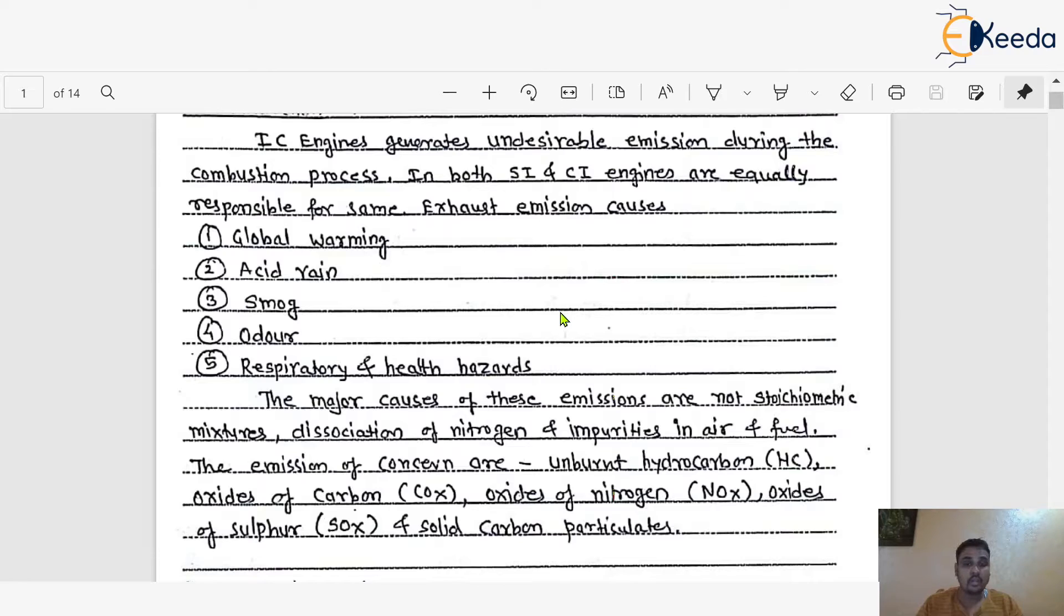The exhaust emission is a very important parameter in the study of particular IC engine. We know the IC engine generates undesirable emissions during the combustion process, and this is in both cases of spark ignition and compression ignition engines, which are equally responsible for the same type of exhaust emission, which causes global warming, acid rain, smoke, odor, and respiratory and health hazards.